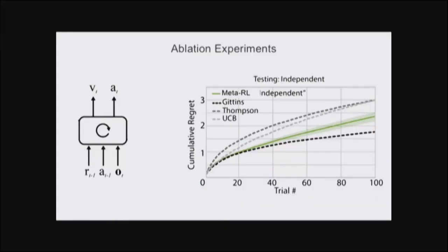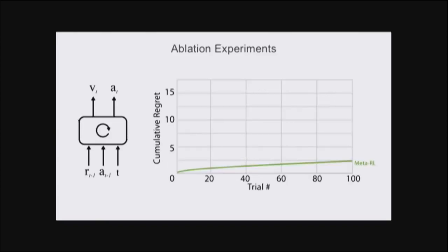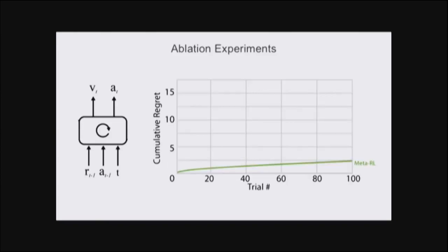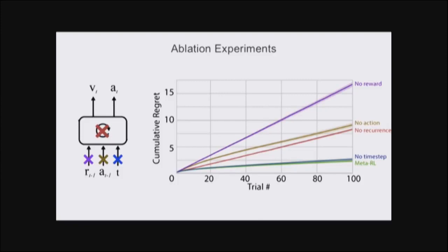Averaging over 300 test episodes, we're doing essentially on par with standard existing algorithms made specifically for this independent bandit task. Gittins indices, UCB, and Thompson sampling all achieve sublinear regret and are known to be state-of-the-art. Nevertheless, we achieve basically the same performance, even though this is a general purpose meta-learning algorithm. We can ask which aspects are crucial by conducting ablation experiments. The ablation experiments show that losing access to any one of the last reward, last action, and recurrence drastically reduces performance, so the model's performing with linear regret without any one of these. All seem to be important.